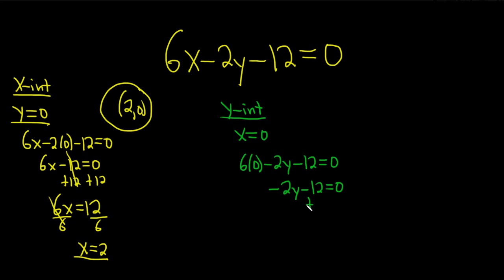We can now add the 12 to both sides, so plus 12, plus 12. Cancel, so we get negative 2y equals 12. Almost there, right? We just have to divide by negative 2, divide by negative 2. So you get y equals negative 6.